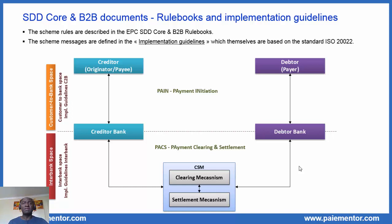The picture depicted here is the four-corner model for the SEPA Direct Debit, no matter if core or B2B scheme. There are two different spaces where the messages are exchanged: the customer-to-bank space and the interbank space. Implementation guidelines are split into two documents according to these two spaces. We have the customer-to-bank implementation guidelines and the interbank implementation guidelines.